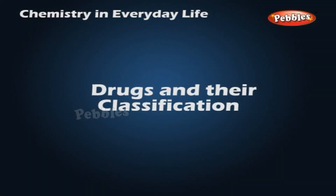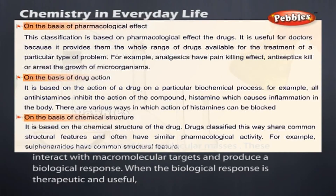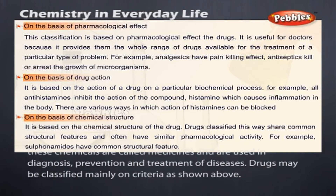Drugs are chemicals of low molecular masses. These interact with macromolecular targets and produce a biological response. When the biological response is therapeutic and useful, these chemicals are called medicines and are used in diagnosis, prevention and treatment of diseases. Drugs may be classified mainly on criteria as shown above.